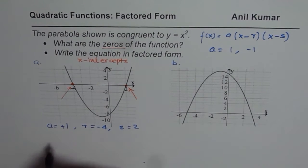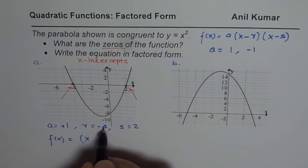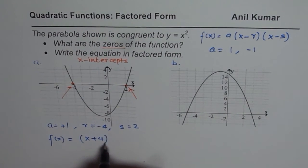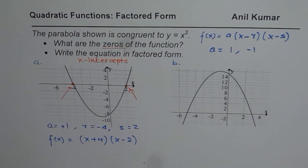And therefore, we could write the function as f of x equals... No need to write 1 here. You can write x minus of minus 4 is plus 4 times x minus 2. That becomes the equation for the first graph.